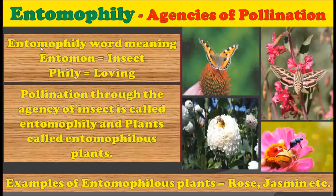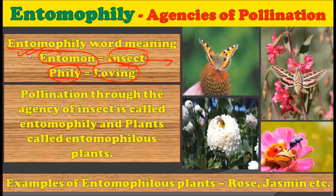First of all, what is meant by entomophily? This word entomophily is made up of two words: entomon and phily. Entomon literally means insect and phily means loving. Those plants or flowers which are insect-loving are called entomophilous plants or entomophilous flowers, and the concept is called entomophily. Pollination through the agency of insect is called entomophily.